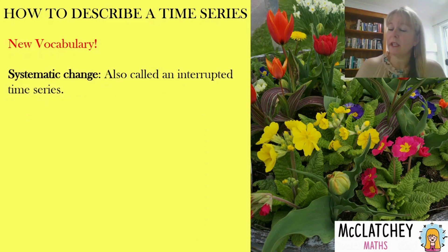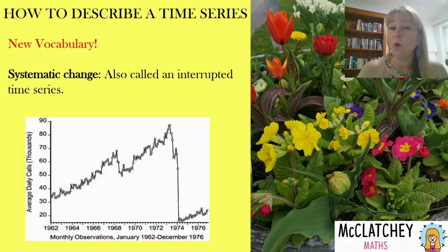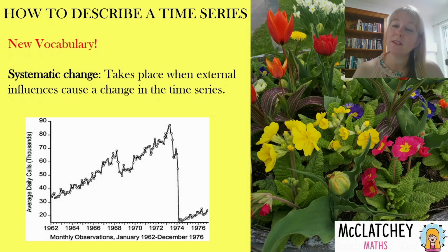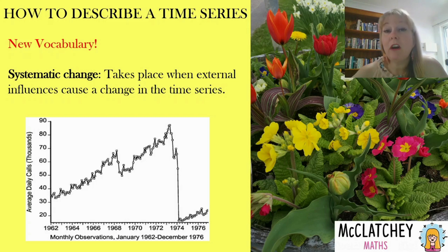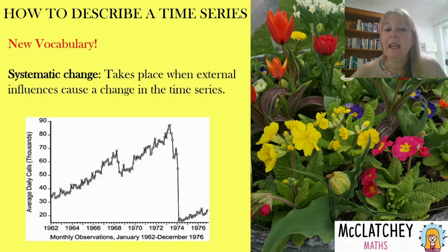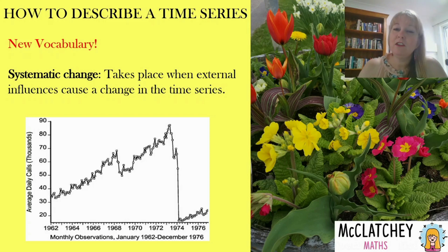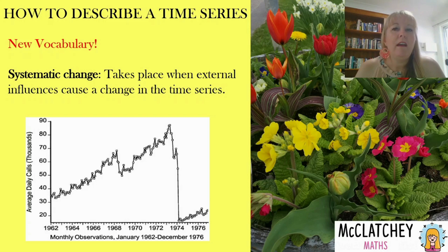Then we have something called systematic change, also called an interrupted time series. This can take place when there's an external influence that might cause a change in the time series. For example, here's a graph of a call centre doing a certain number of calls — then suddenly it stops and starts to grow again. That could be a situation where they tried outsourcing calls to another company for 12 months, it didn't work well, so they brought the system back on board and it's going back through its growth. We see this when households change their electricity or internet provider.